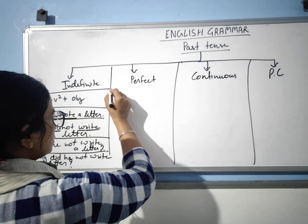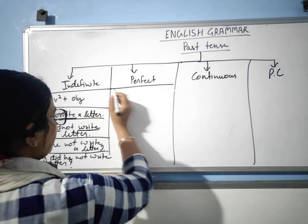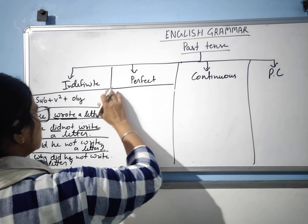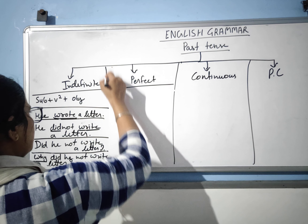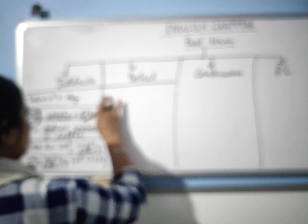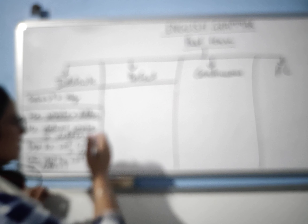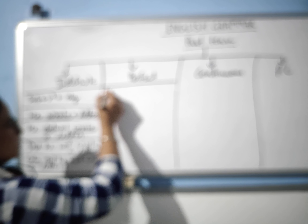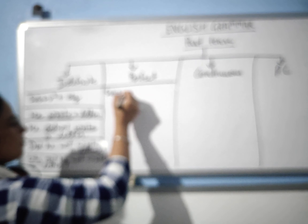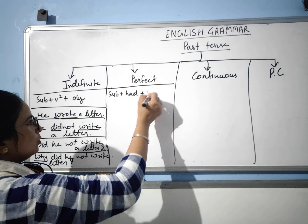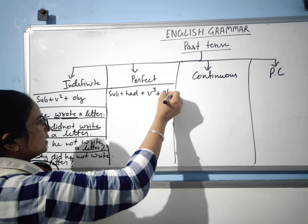Now let us learn about past perfect. 'Perfect' means complete — the work that has been completed perfectly. In past perfect, the work had been completed in the past perfectly. The structure is: subject plus 'had' plus verb third form plus object.